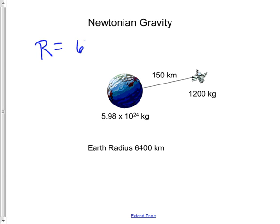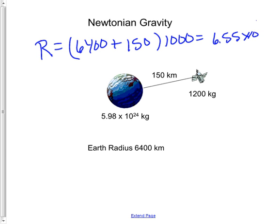We'll take 6,400 plus the 150, and those are both kilometer values. So we times this by 1,000, and get 6.55 times 10 to the 6 meters.